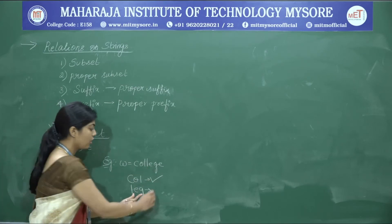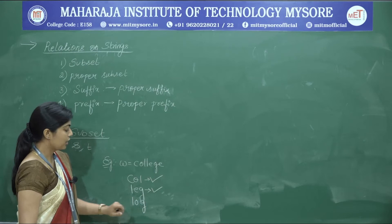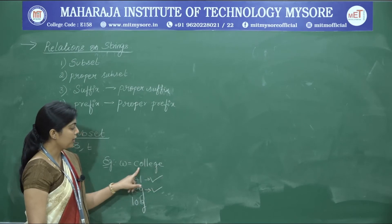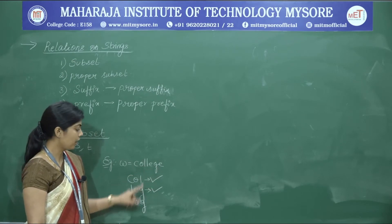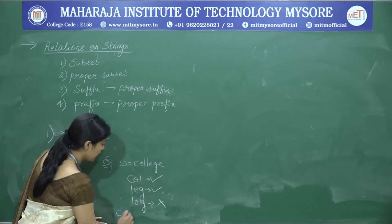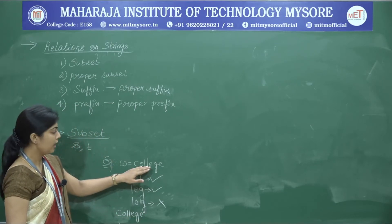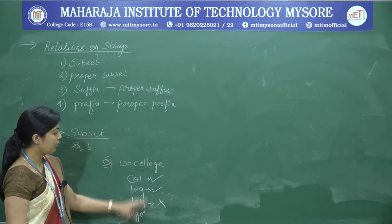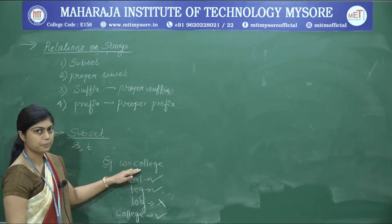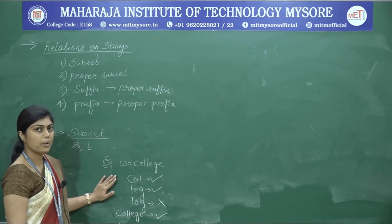Next we take 'log' and check whether it is a substring of 'college'. Nowhere can we find l, o, g appearing together in the string, so 'log' is not a substring. Then we take 'college' itself — all the alphabets appear continuously in the string, therefore 'college' is also a substring of w.